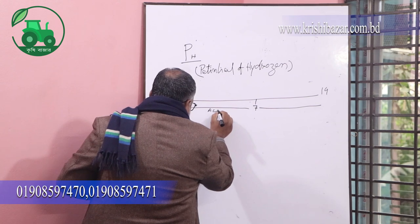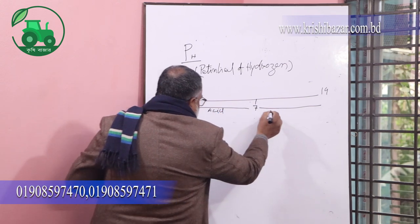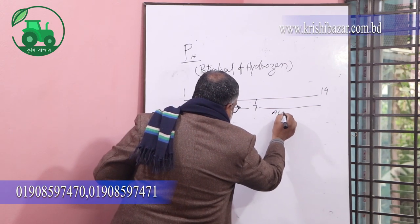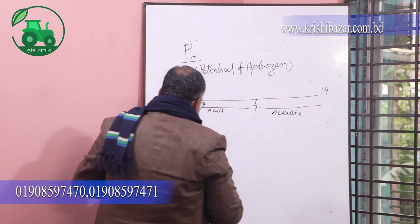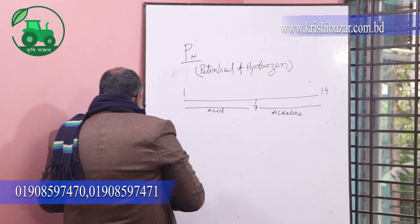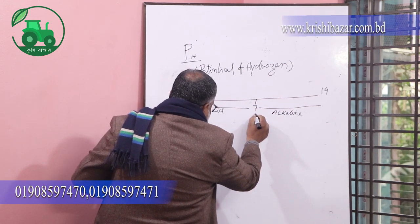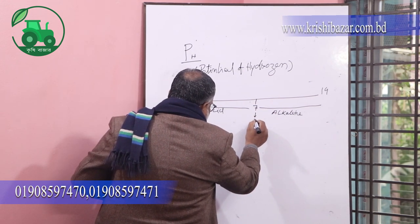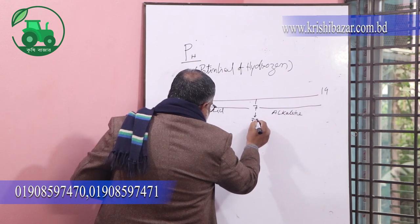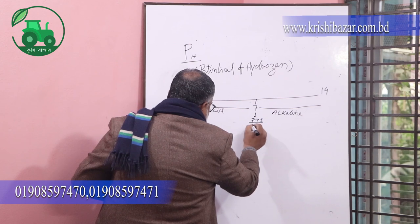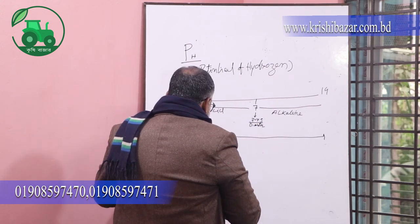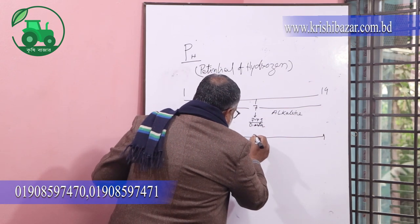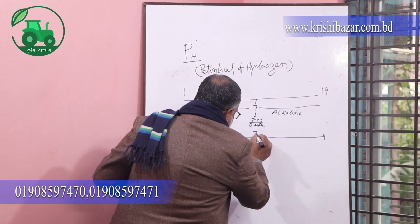Acid is below 7. Alkaline is above 7. How much — water is 7? Water is 7 to 7.5. Yes, drinking water is 7 to 7.5, up to 8. The amount of water is 7.5.